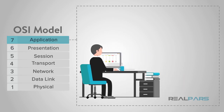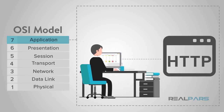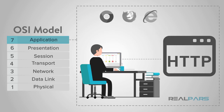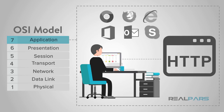One of these protocols may be HTTP, which is used with web browsers such as Google Chrome, Firefox, and Internet Explorer. Other examples of applications that use this layer are Office, Outlook, and Skype. All of those interactive applications provide a set of services that allow the application layer to supply data to and receive data from the presentation layer.